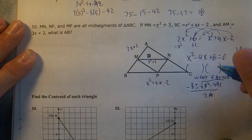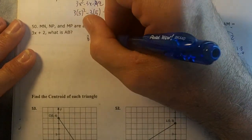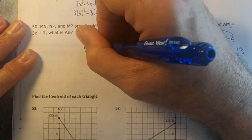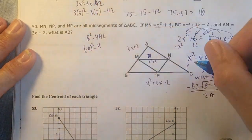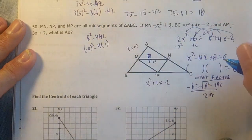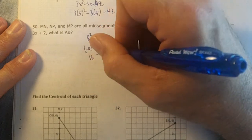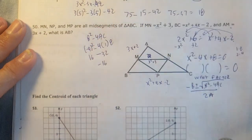So b² - 4ac: b is -4, a is 1, and c is 8. I get 16 - 32 = -16.